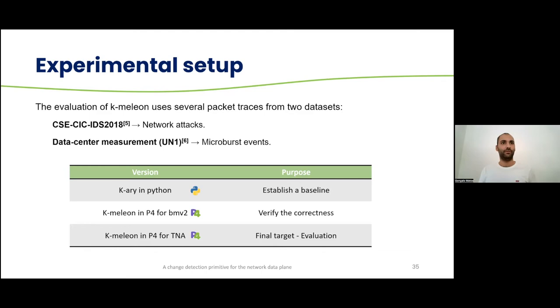The evaluation of Chameleon uses several packet traces from two datasets. One of them, or the first one containing network attacks, and the second one containing microburst events. We used three versions of the code to perform these tests. The first one, we had to implement the K-Area in Python because there was no implementation available, and we had to establish a baseline to verify our program. Next, we implemented Chameleon in P4 for the behavior model to verify the correctness and to check if everything matched up with the original algorithm. Next, we are targeting the Tofino native architecture. So we are building P4 code for the final target, which is the Tofino, and then we'll perform the final evaluation.